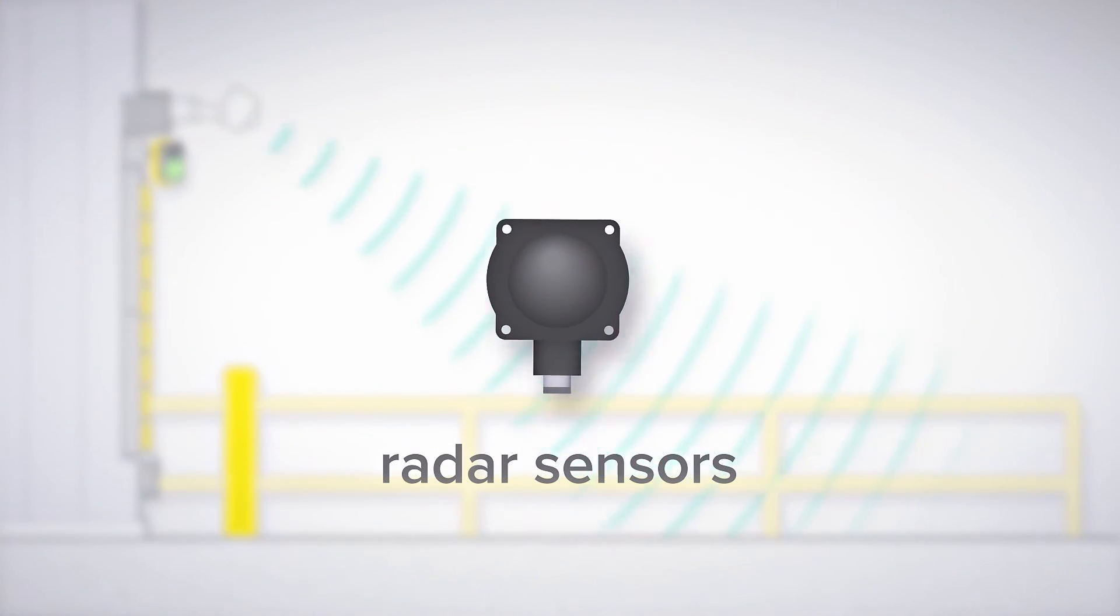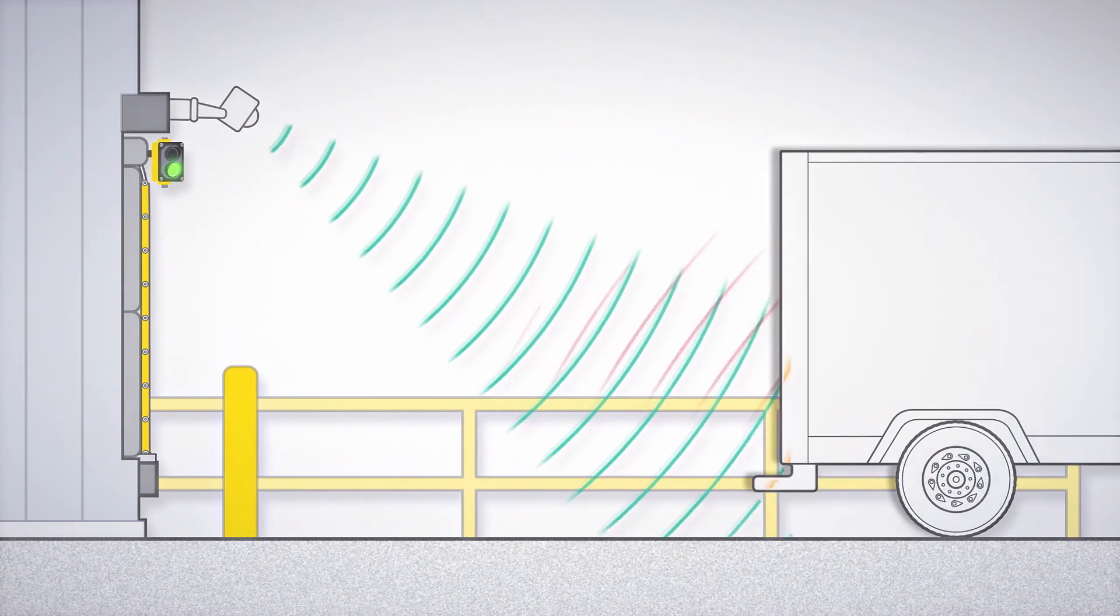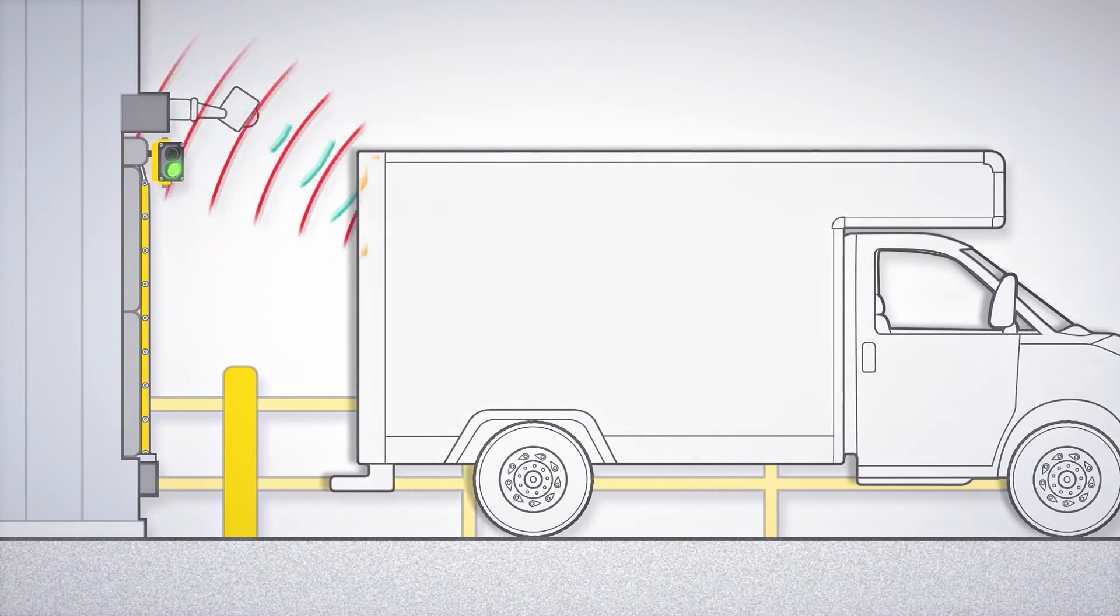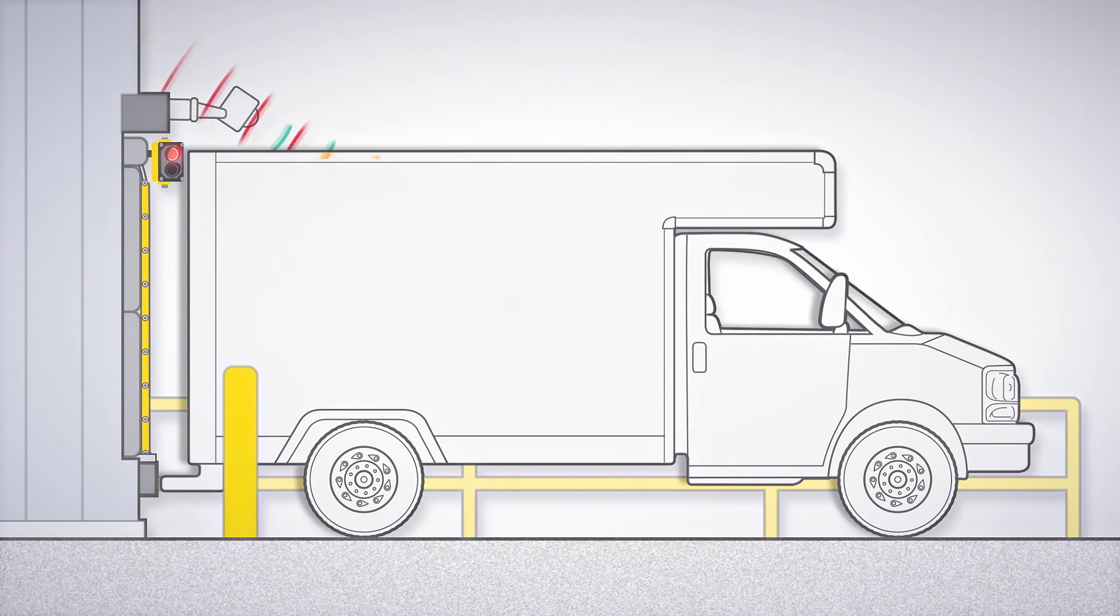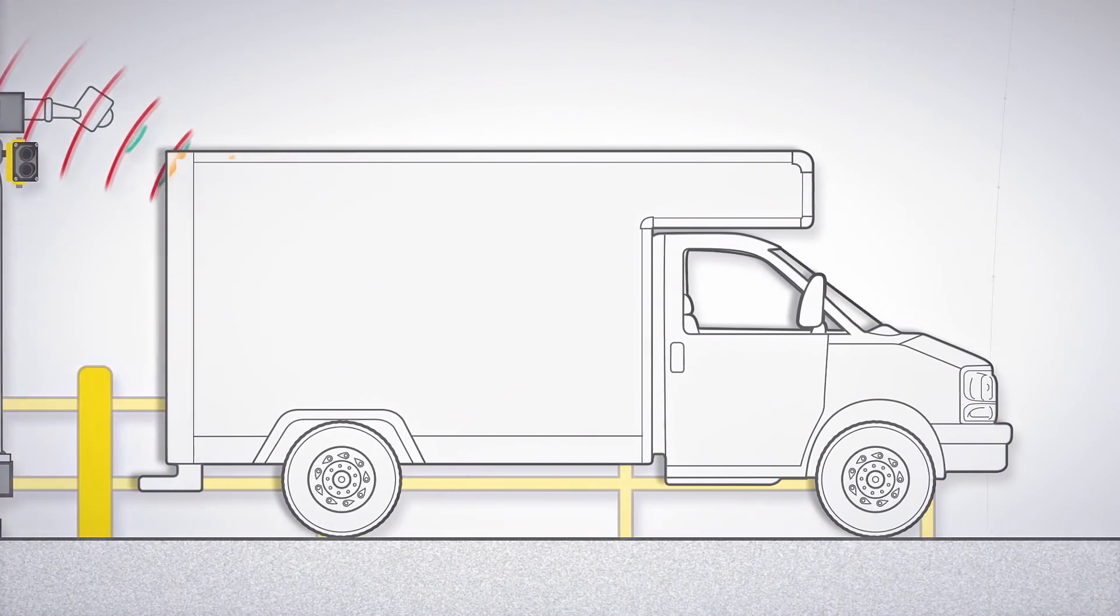Radar sensors reliably detect moving or stationary targets. Use them, for example, to trigger vehicle arrival alerts at docking bays and increase worker efficiency. Radar is a popular choice for large and predictable targets and will function regardless of weather conditions.